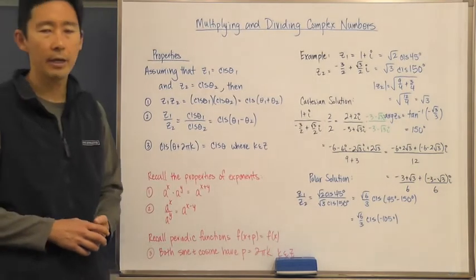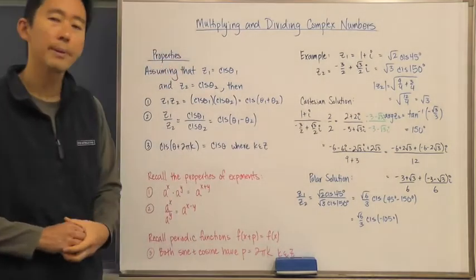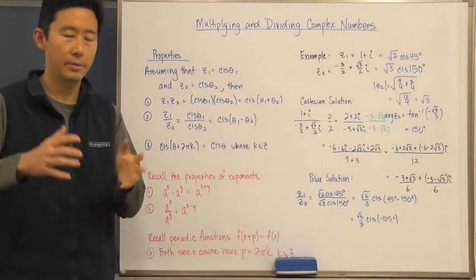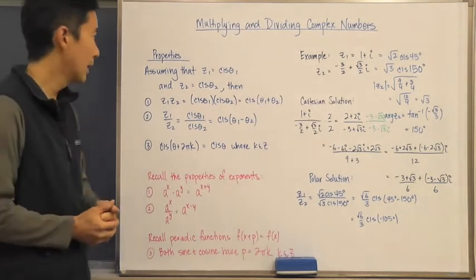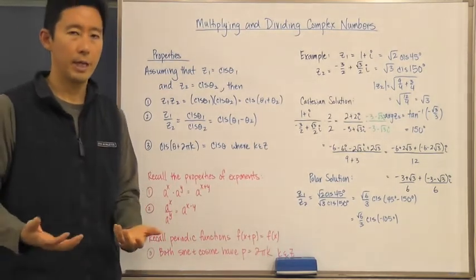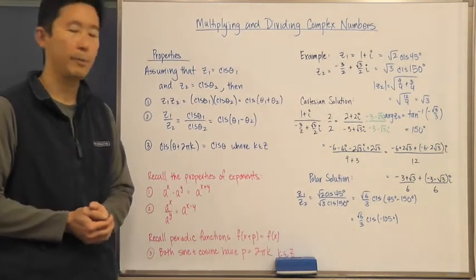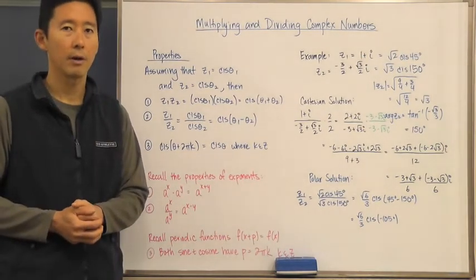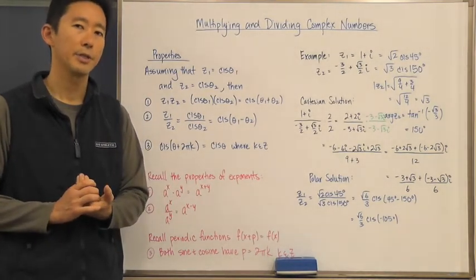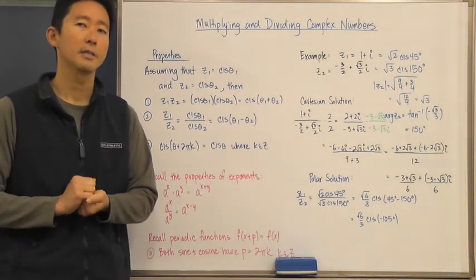To wrap up: we know how to multiply and divide complex numbers using Cartesian form. By converting to polar form, we can use these properties to perform multiplication and division more efficiently, and we have memory aids for those properties. We'll look at the proofs in class and address any questions about multiplying and dividing complex numbers. See you later!